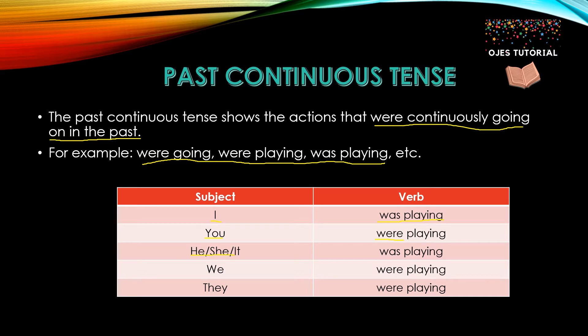For he, she, it, we use the auxiliary verb was because they are singular. And the auxiliary verb for we and they is were.